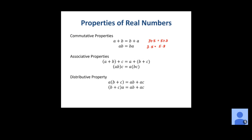We also have an associative property, which tells us it doesn't matter how we group addition or multiplication — we'll still get the same answer. For example, (3 + 4) + 5 equals 3 + (4 + 5). Following order of operations, doing parentheses first: 7 + 5 = 12 on the left, and 3 + 9 = 12 on the right. According to the associative property, it doesn't matter what order we group these things. The same holds for multiplication.